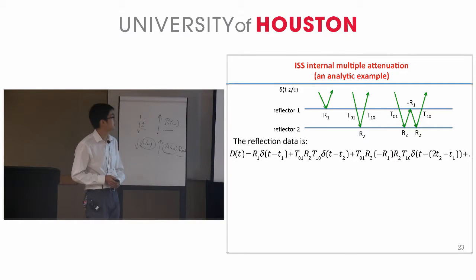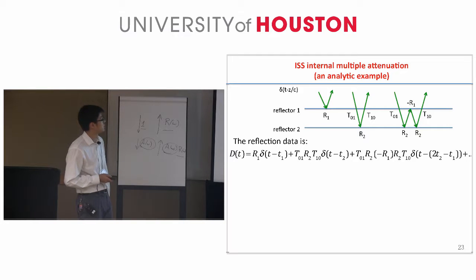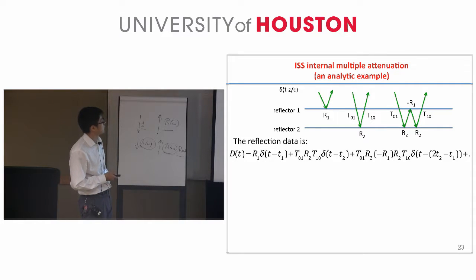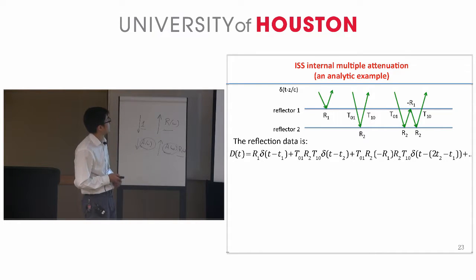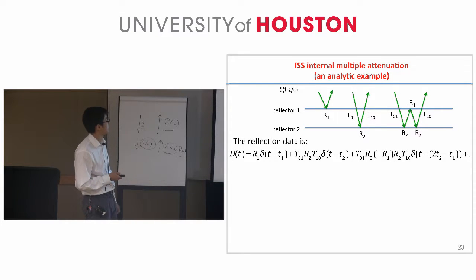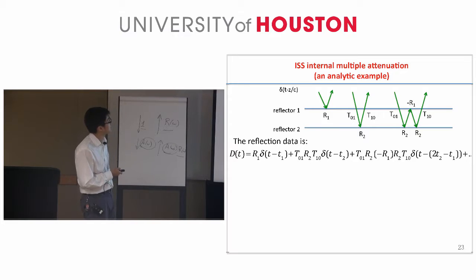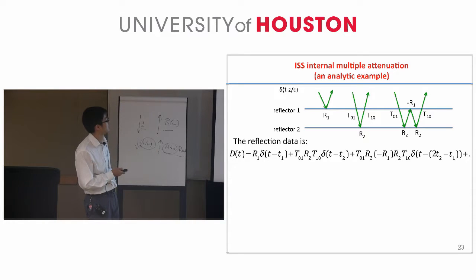I will take you through an analytical example to show the difference between attenuation and elimination. We have a 1D normal incidence analytical example where the model has two reflectors. The reflection data contains two primaries: the first primary has amplitude R1, the reflection coefficient from the first reflector. The second primary, when it travels down and back to the receiver, has two transmission coefficients related to the first reflector — T0-1 and T1-0 — and the reflection coefficient R2 from the second reflector.